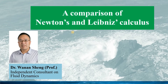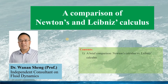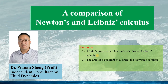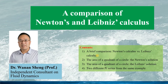Hello, welcome to my talk on a comparison of Newton's and Leibniz calculus. I will use an example to see what are the differences between Newton's calculus and Leibniz calculus. I will make a brief comparison for both, using the example of the area of a quadrant of a circle — first with Newton's method, then with Leibniz's method — and we will see two different pi series obtained from the same example.